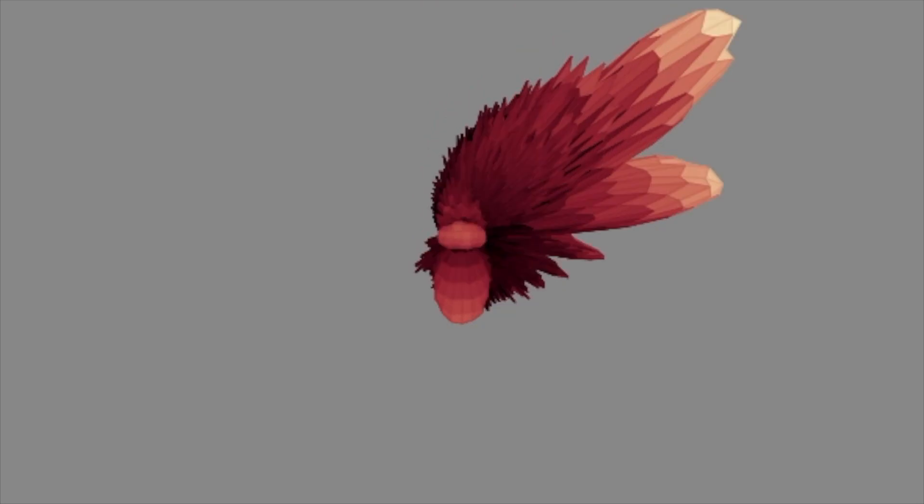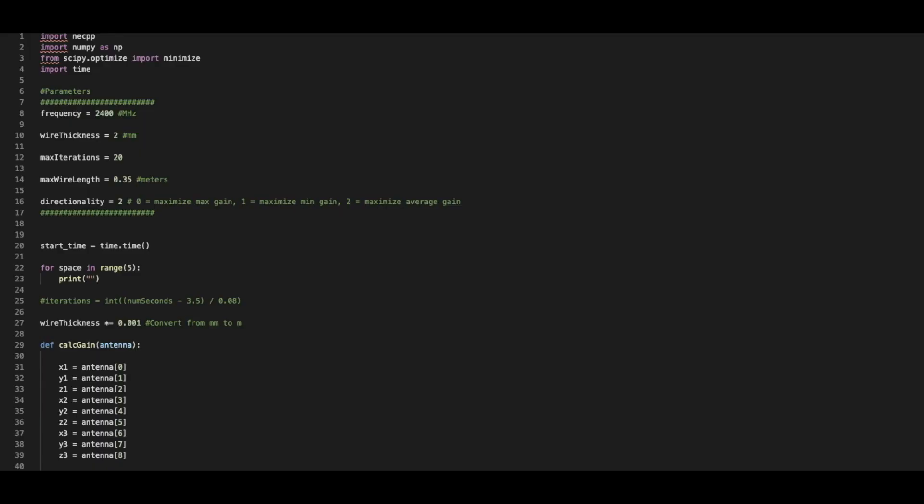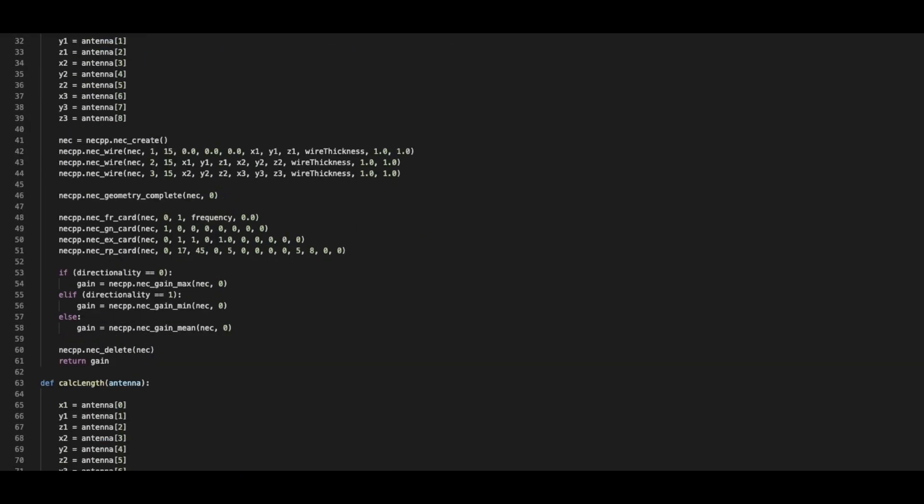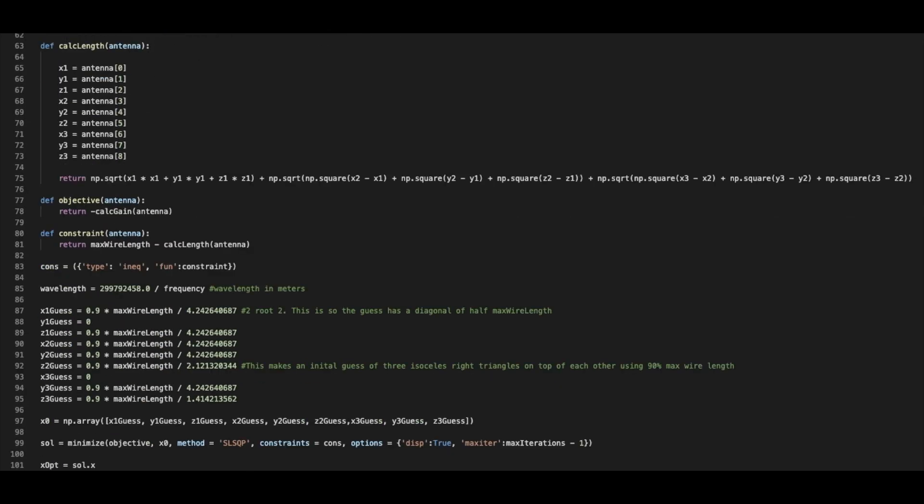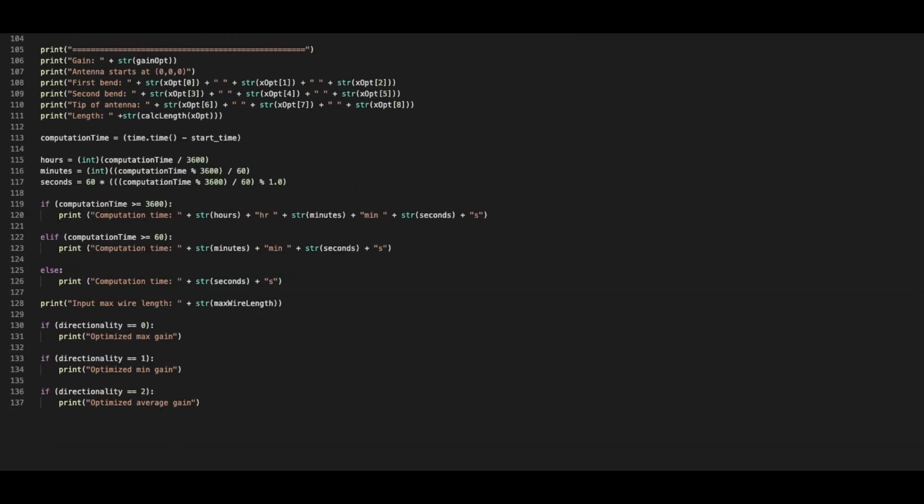Without access to NEC4, I needed to do something different if I were to design a 2.4GHz antenna. I rewrote my code to utilize the optimize function within the SciPy library. I still had issues with NEC2, but I had success occasionally, which is all I need if I am looking to design just one antenna.